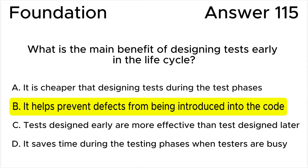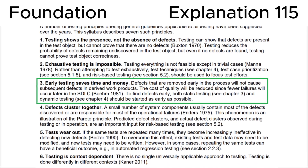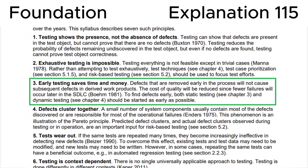My recommendation: please figure out all testing principles with examples to understand the meaning of each. Looking at section 1.3 Testing Principles in the ISTQB syllabus, testing principle 3 — Early Testing — states that defects removed early in the process will not cause subsequent defects in derived work products. The cost of quality will be reduced since fewer failures will occur later in the SDLC. Both static and dynamic testing should be started as early as possible. This leads us to the correct answer: B.